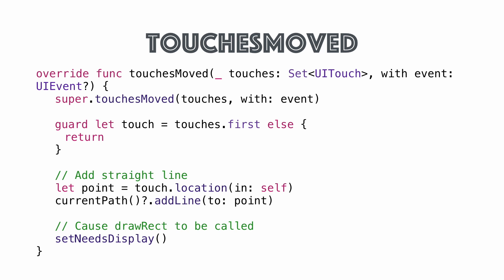In touchesMoved, after the user's finger has moved, we have the same boilerplate code, get the point, then call currentPath — a helper that returns the last UIBézierPath object — and add a line from the previous point to this new point. In this MVP version of our drawing program we're just doing straight lines. We call setNeedsDisplay to show it on screen. If you recoil in horror seeing setNeedsDisplay without parameters, it will refresh the entire screen every time, which isn't great performance — but we'll fix that a little bit later.